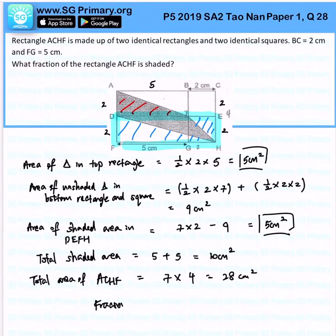The fraction that is shaded will be 10 over 28. We have to simplify it and the final result will be 5 over 14. That is the answer for this question.